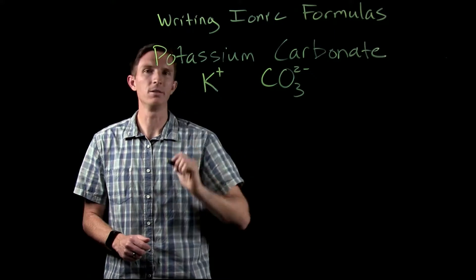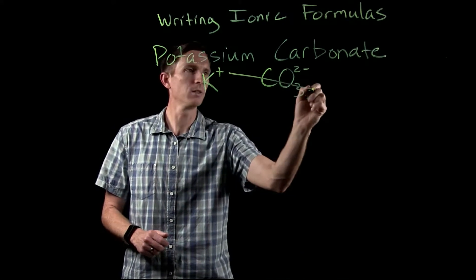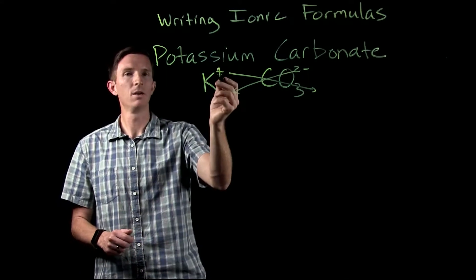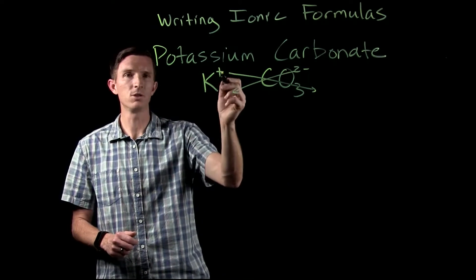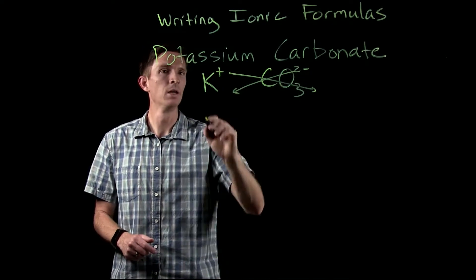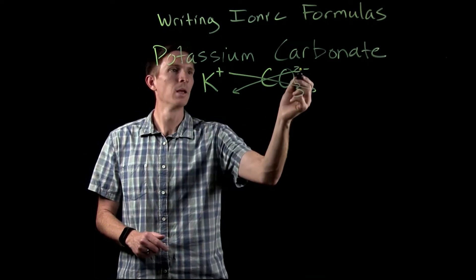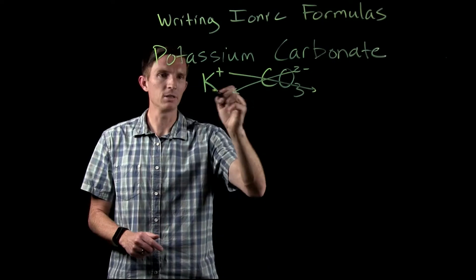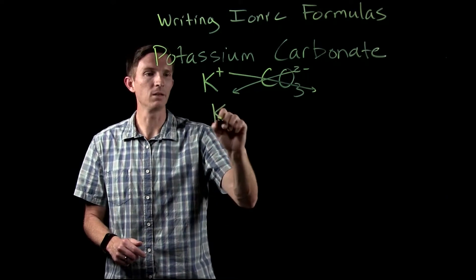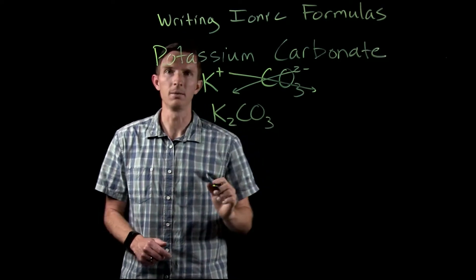Now we need to combine these two ions in a way that makes it electrically neutral. We can do that by applying the criss-cross rule. We take the magnitude of the charge of one and make it the subscript of the other. So potassium would make the subscript of carbonate 1, and carbonate negative 2 would make the subscript of potassium 2. So it becomes K2CO3.